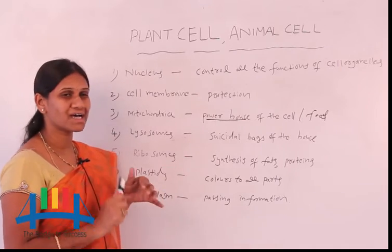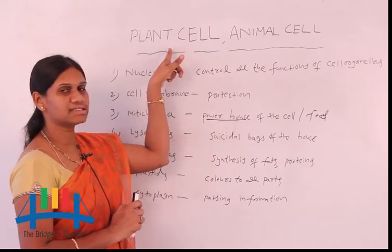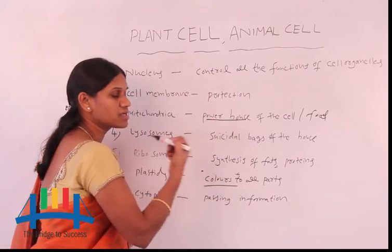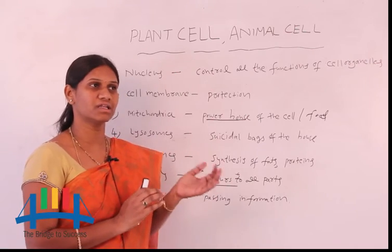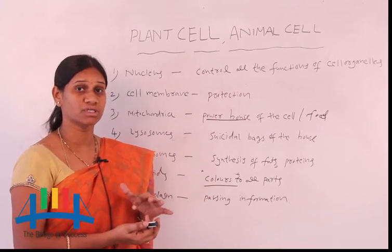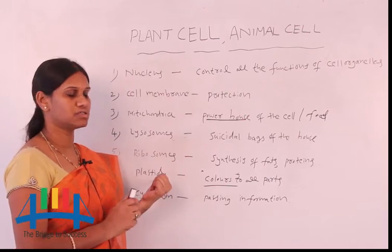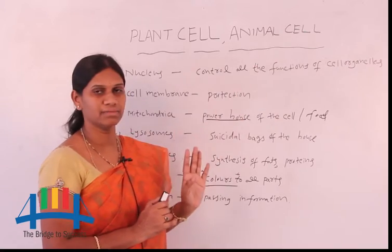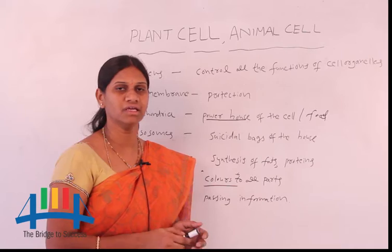The next cell organelle is plastids. Plastids are present only in plant cells. The function of plastids is to give color. Commonly, we observe many colors in plants — leaves are green, fruits are yellow, white, or orange, and flowers have different colors. The cause of these colors is due to plastids. So plastids are present only in plant cells and are absent in animal cells.